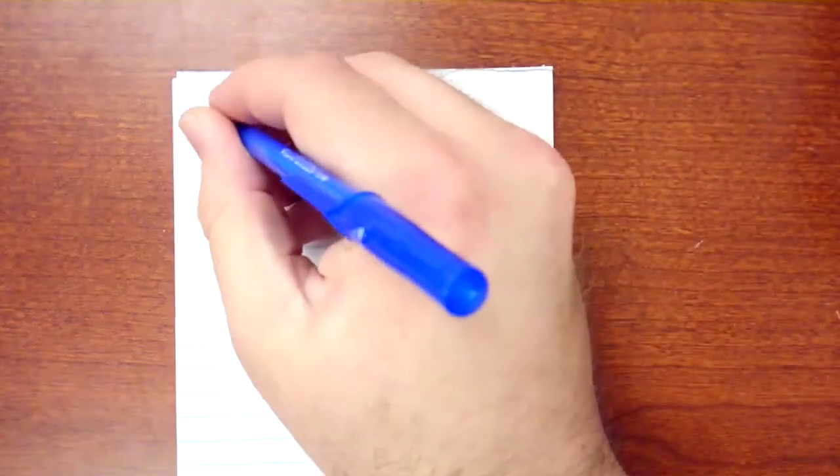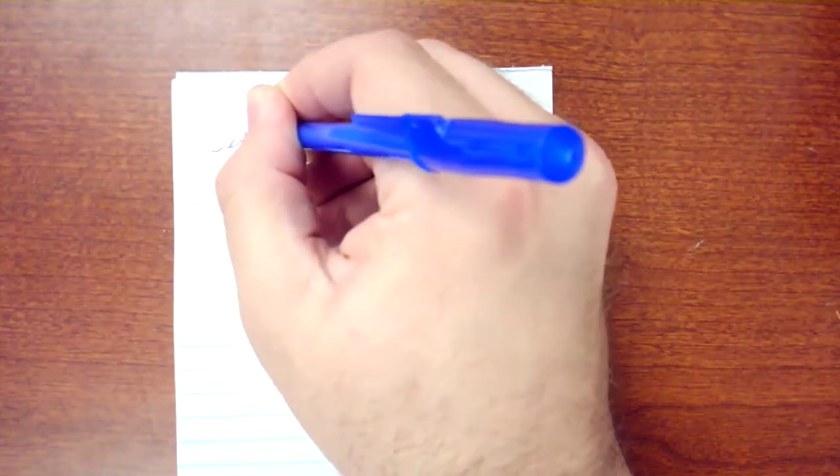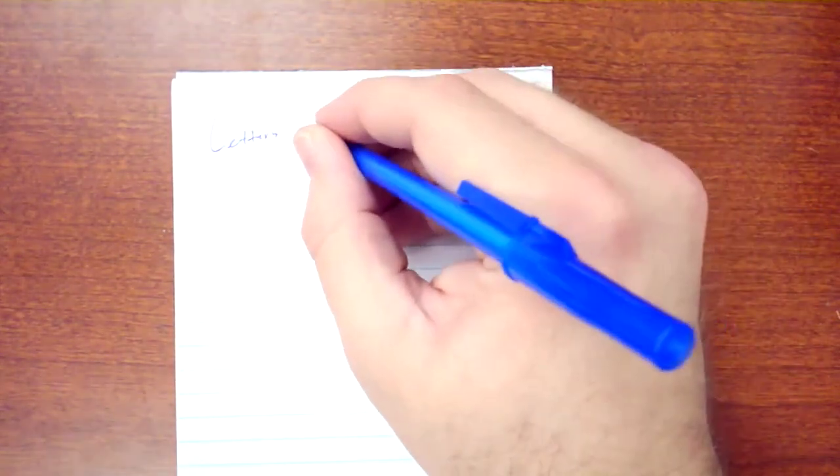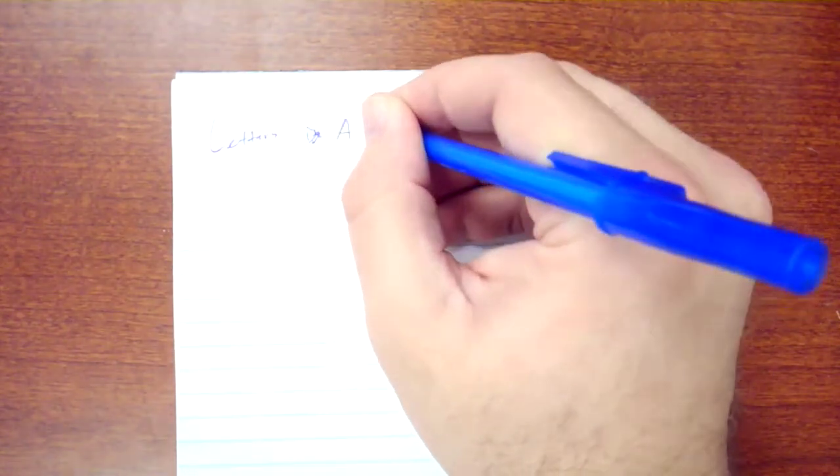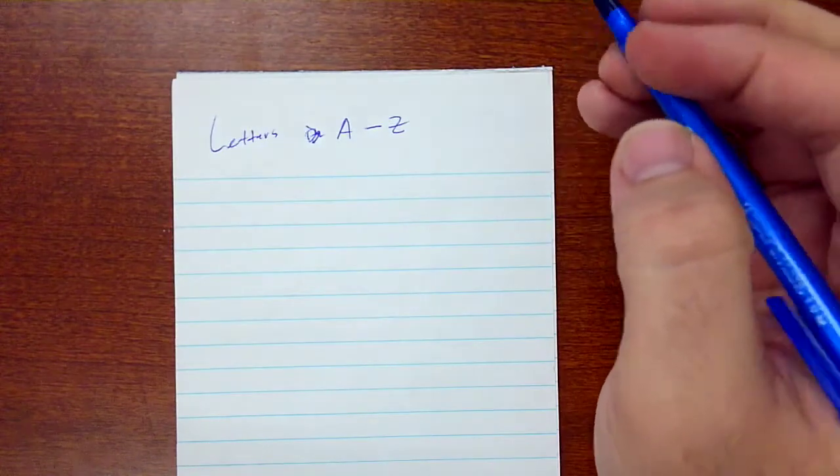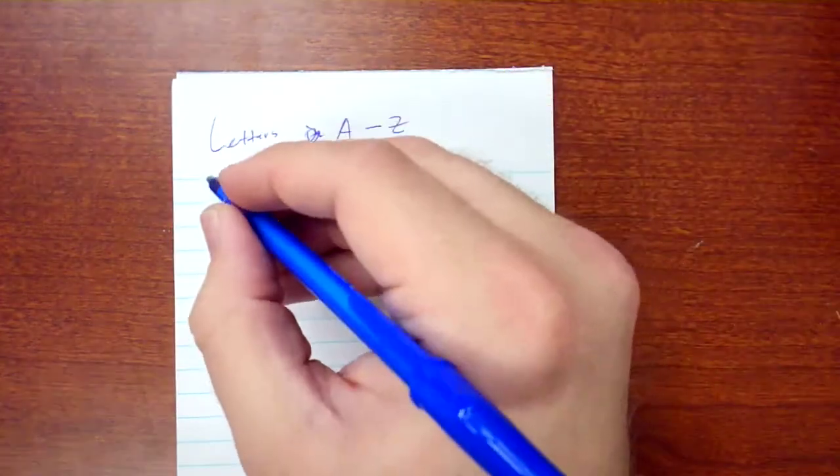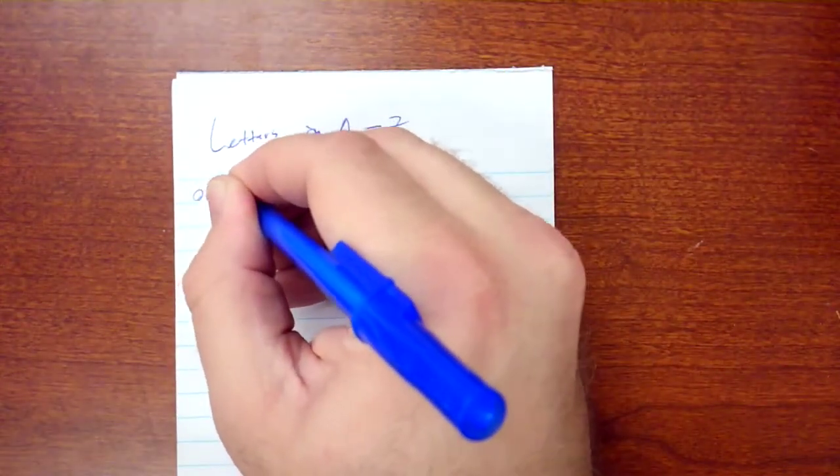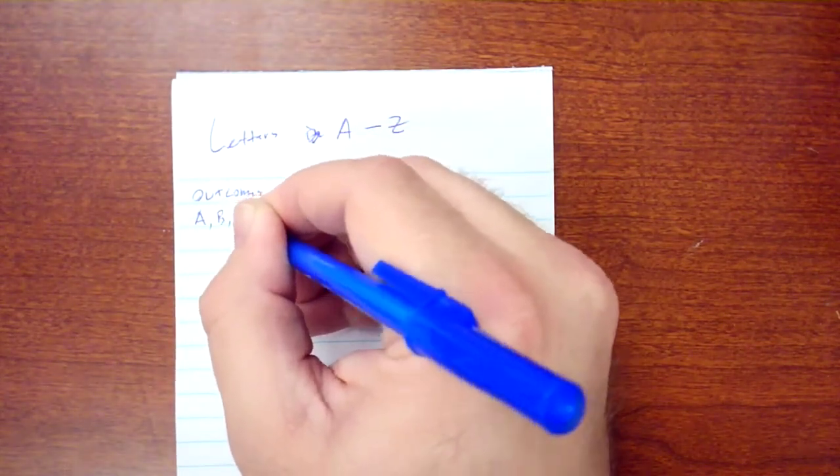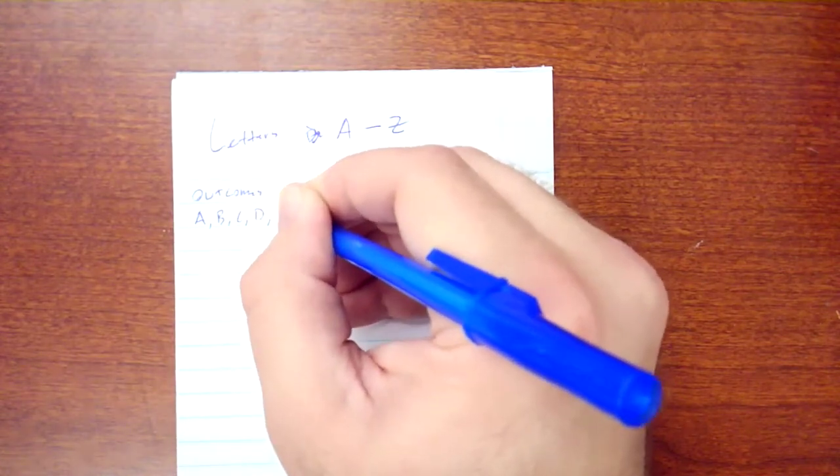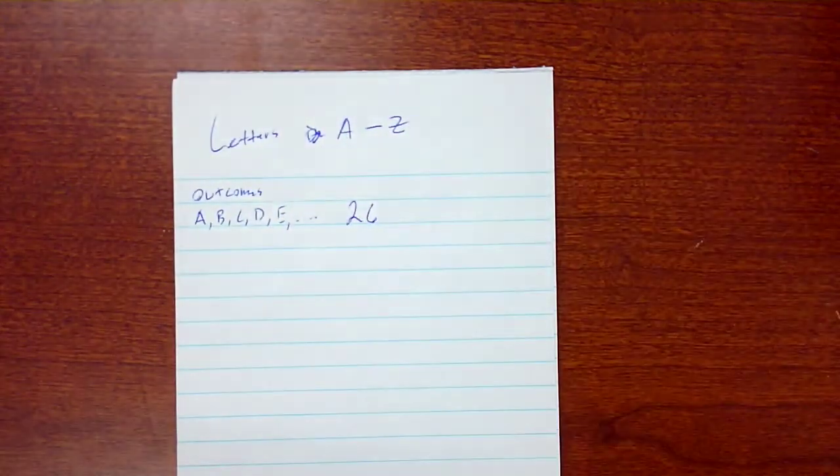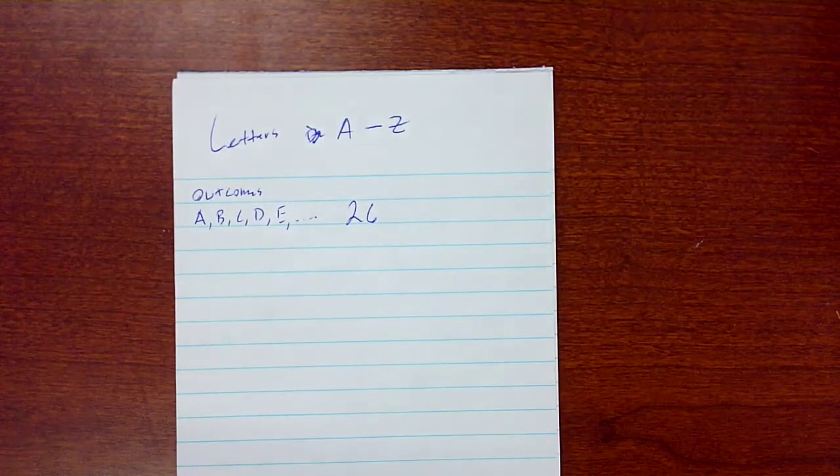We're going to do letters A through Z in the alphabet. So our outcomes are A, B, C, D, E, and so on. We have 26 of them. Letters A through Z are 26 letters.